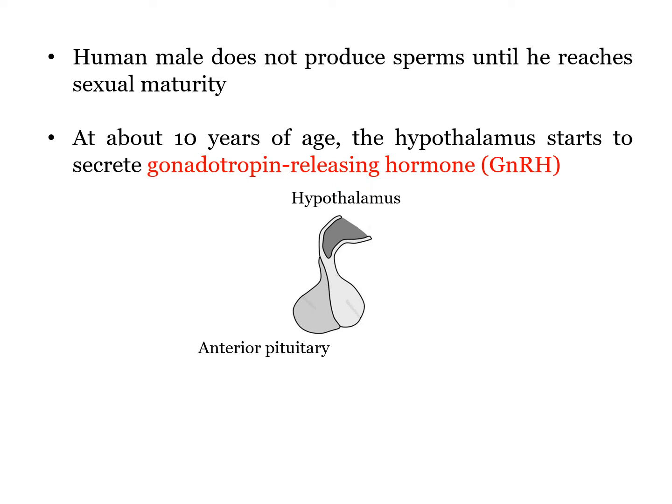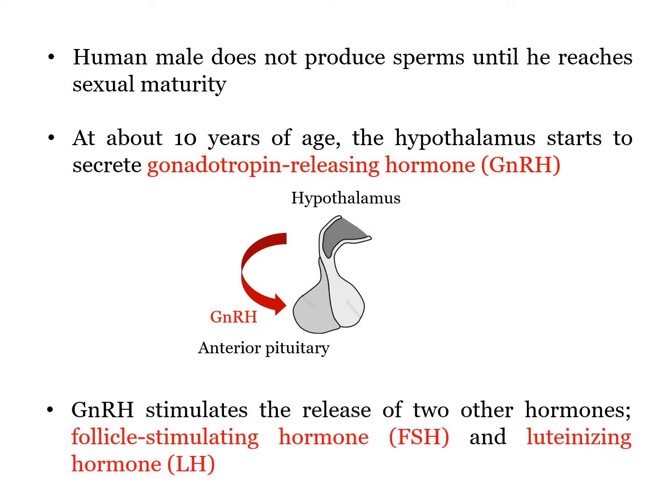Before we go any further on the process of spermatogenesis, let's take a look at the hormonal mechanism in males that stimulates the process of producing sperms. A human male does not produce sperm until he reaches sexual maturity or puberty. As the male reaches about 10 years old, his hypothalamus starts to secrete gonadotrophin-releasing hormone, or GnRH. When released, GnRH will trigger the release of two other hormones: follicle stimulating hormone, FSH, and luteinizing hormone, LH.